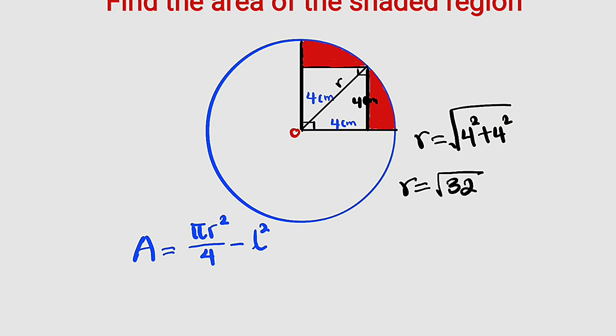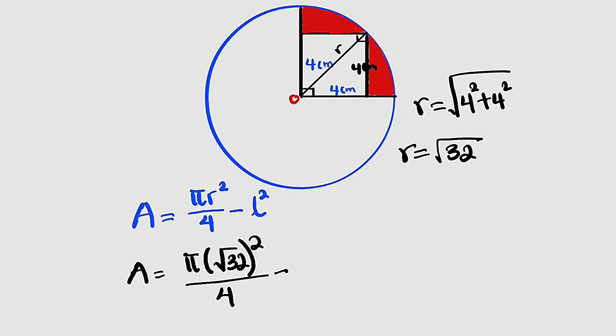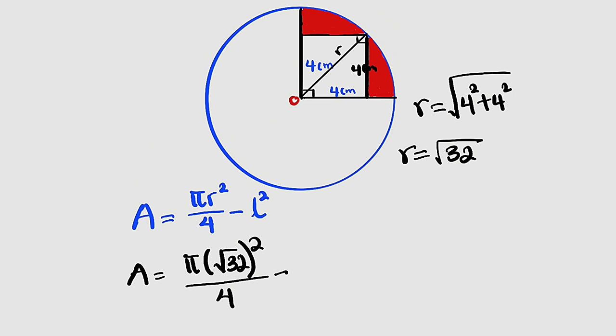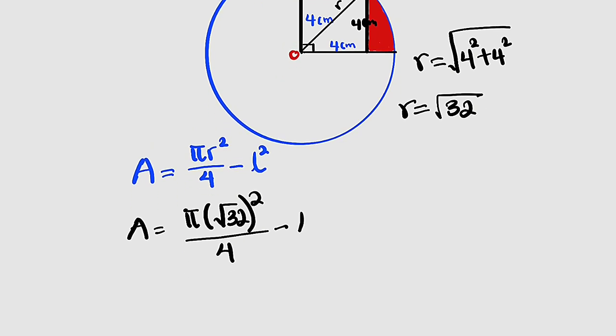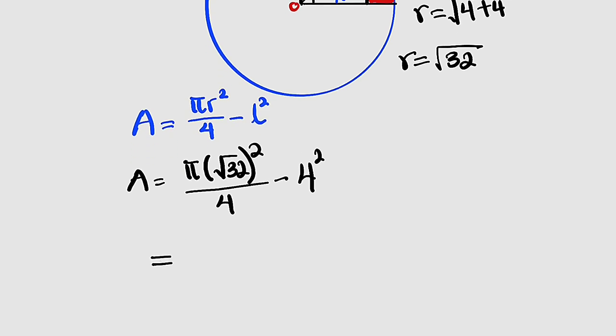Now the area is equal to πr² - what is r? Square root of 32 squared, divided by 4, minus the area of the square, which is 4². This is equal to π times 32 - the power of 2 will cancel this square root - so 32 divided by 4 is 8, so we have 8π.